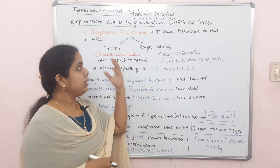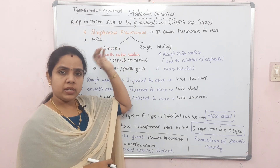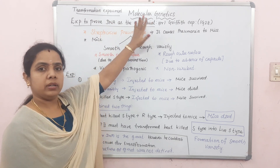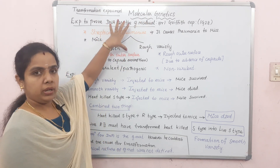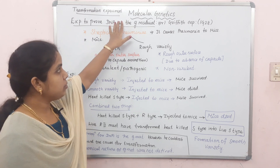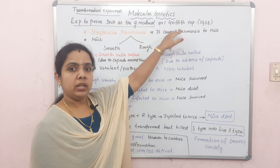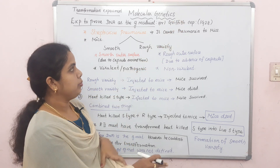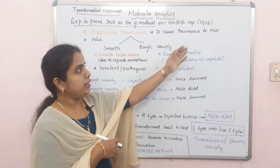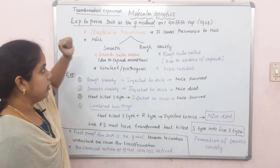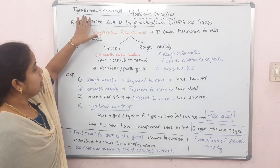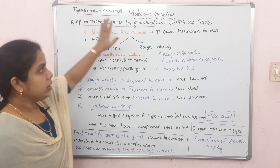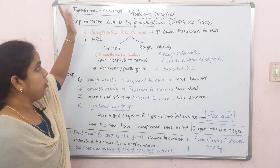The first experiment to prove DNA as genetic material was conducted by Griffith — Friedrich Griffith — in 1928. This experiment is called the Griffith Experiment, or the Transformation Experiment. It is an experiment to prove DNA as a genetic material.